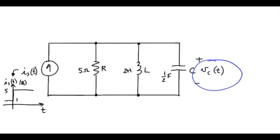This is a parallel RLC circuit. It's driven by a current source that has one of two values, either 1 amp prior to t equals 0, after t equals 0, it becomes 5 amps, and it does this in essentially a step-like fashion.